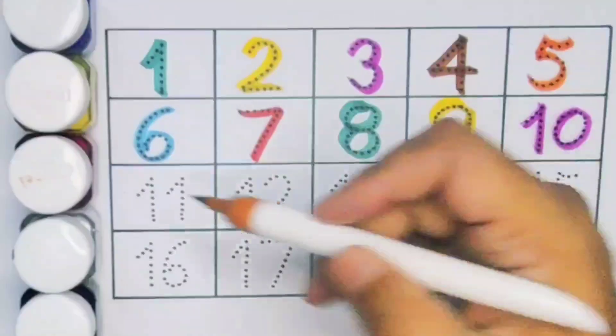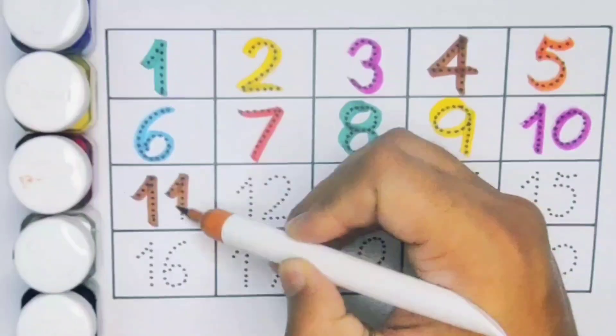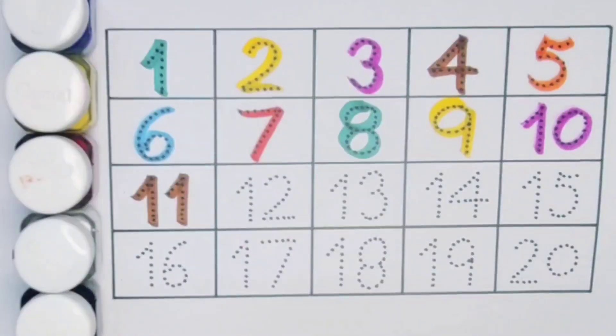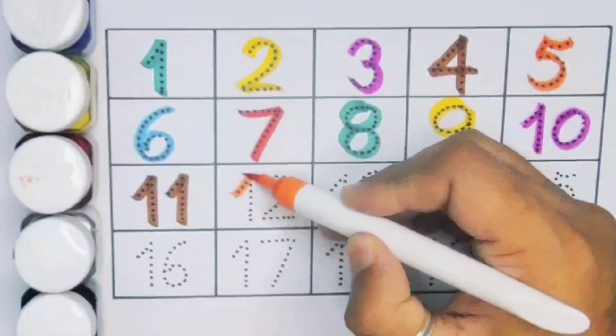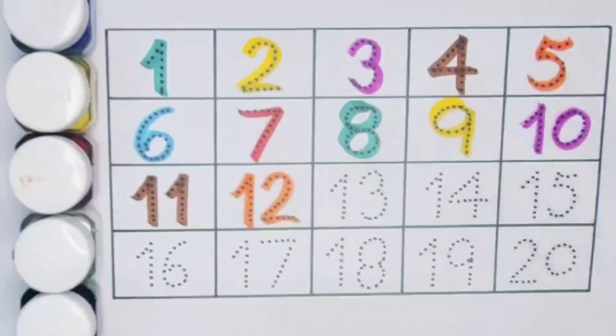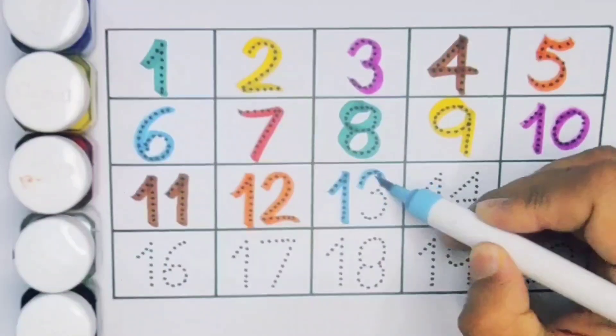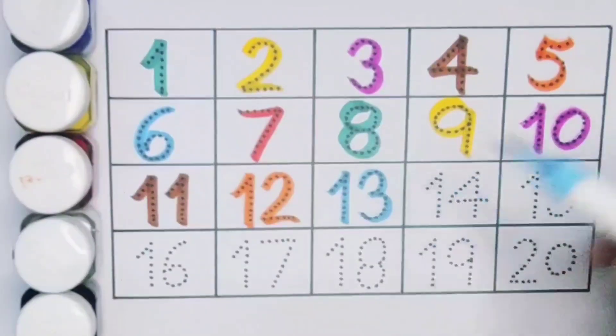Next kids 11, 1, 1, 11, number 11. Next kids 12, 1, 2, 12, number 12. Next kids 13, 1, 3, 13, number 13.